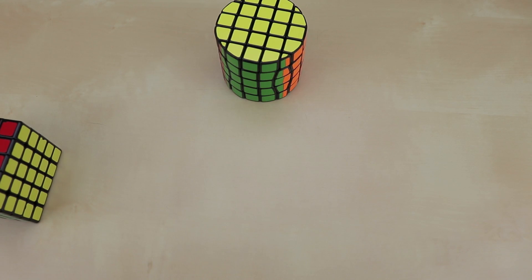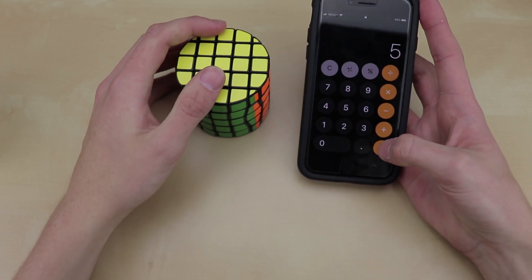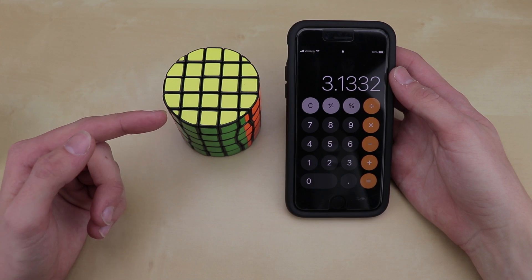So if we put that into a calculator real quick, 15 and 2 thirds divided by 5, which is the diameter, and we get 3.13. So there you go. There is a pretty good approximation of Pi using a barrel cube.